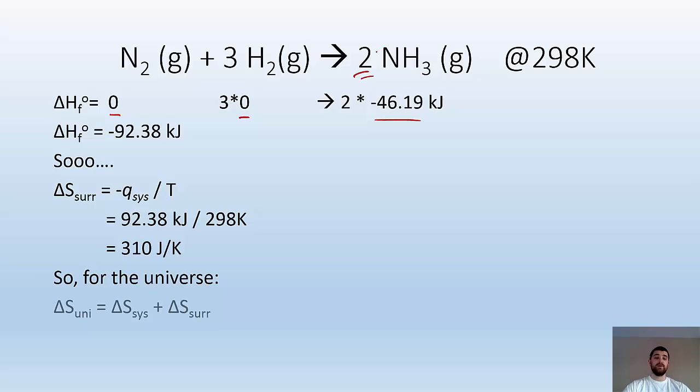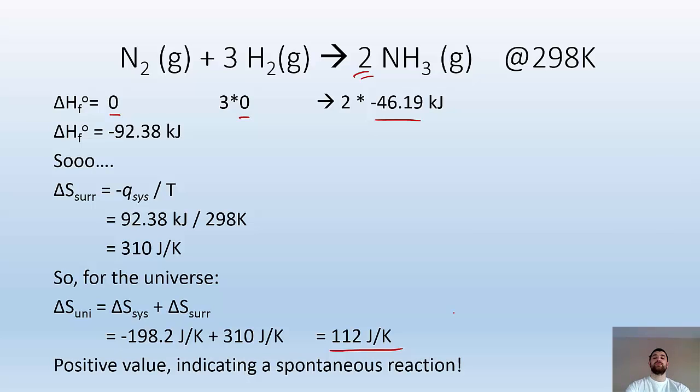For the whole universe, ΔSuniverse = ΔSsystem + ΔSsurroundings. Combining those numbers, we get an overall change of 112 joules per Kelvin. Notice it's positive, which confirms it's a spontaneous reaction. The entropy of the universe increases, and that's it.